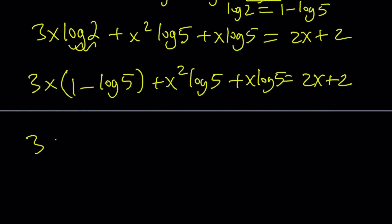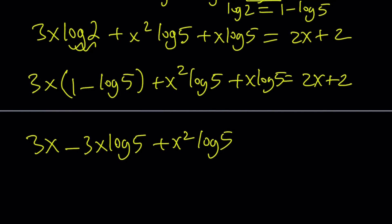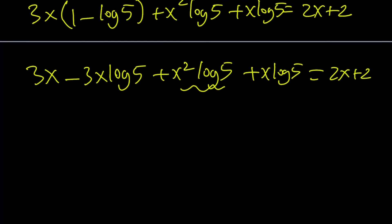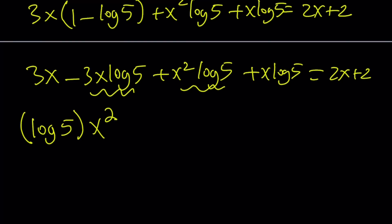If you distribute, you get 3x minus 3x log 5 plus x squared log 5 plus x log 5 equals 2x plus 2. This is going to be our quadratic term, so I write it as log 5 times x squared. The coefficient of x: negative 3x log 5 and x log 5 combine to negative 2x, so the x term is negative 2 log 5 times x. We also have the plus 3x.